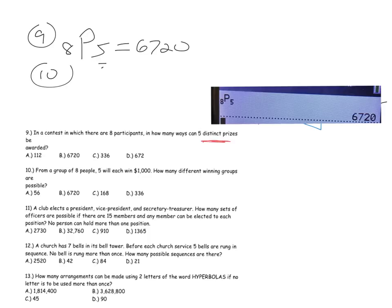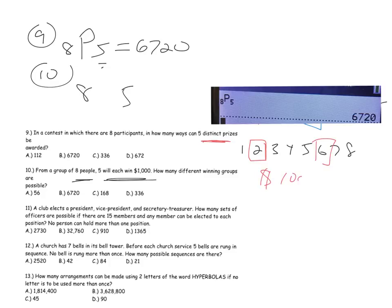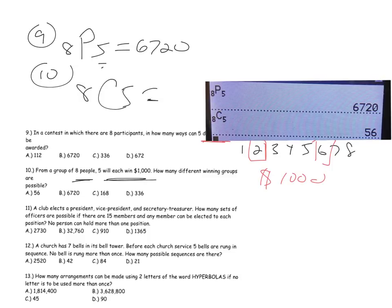Problem ten: from a group of eight people, five will each win $1,000. Whether you get pile two or pile six, they're all $1,000. It doesn't matter the order because all the prizes are the same, so this is a combination: 8C5, or 56 ways.